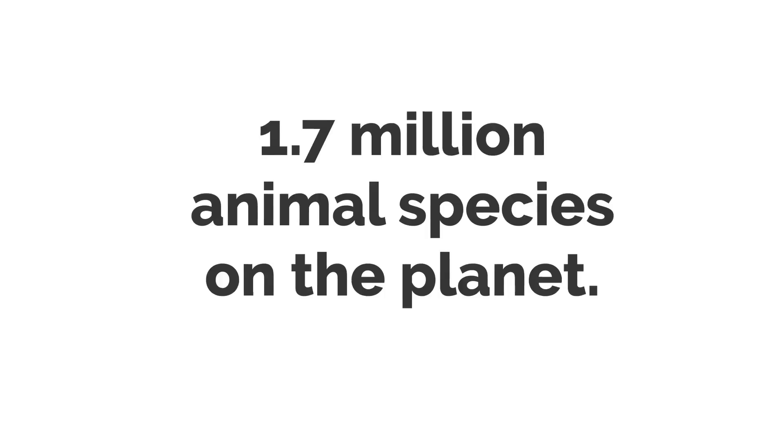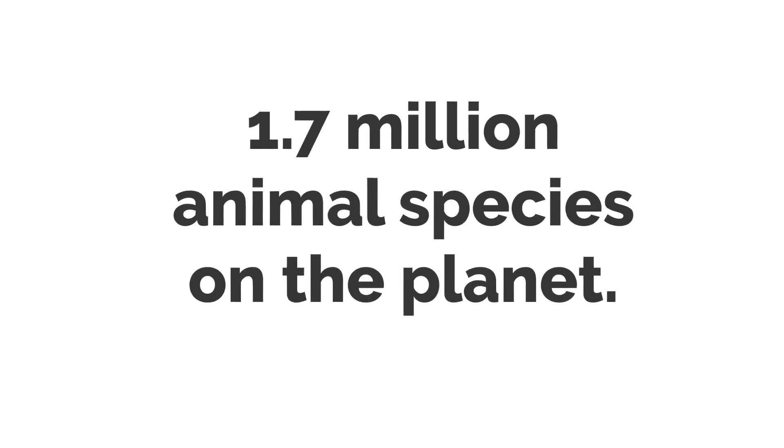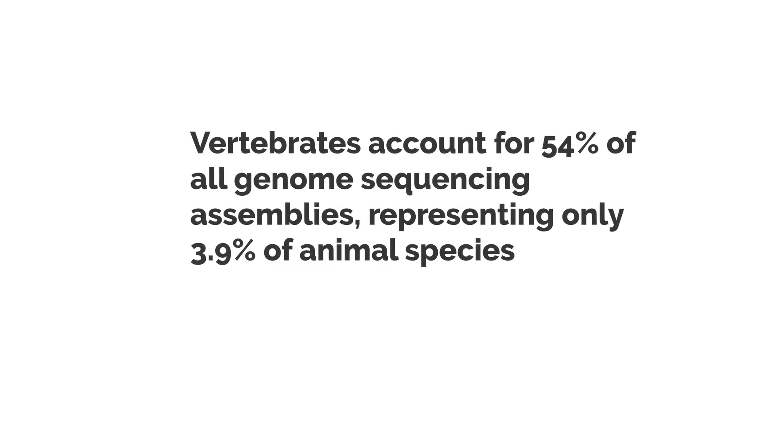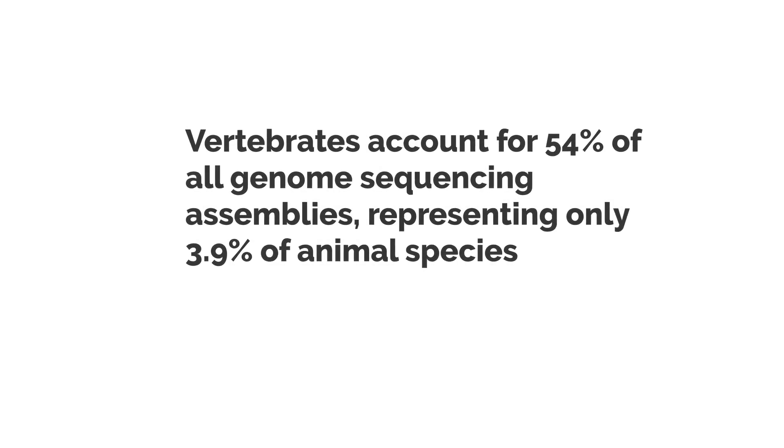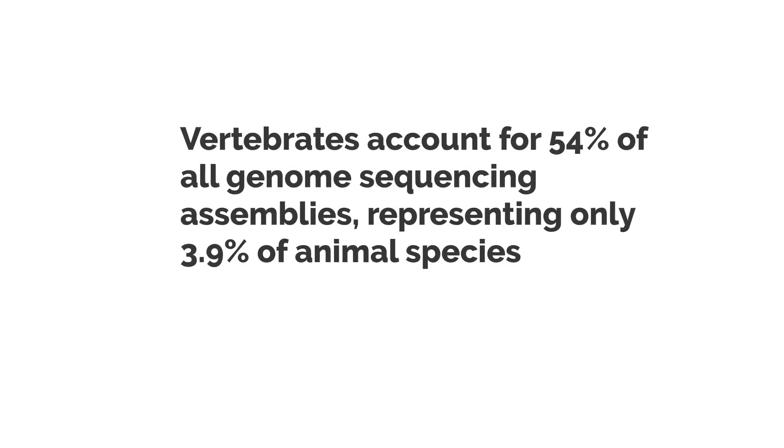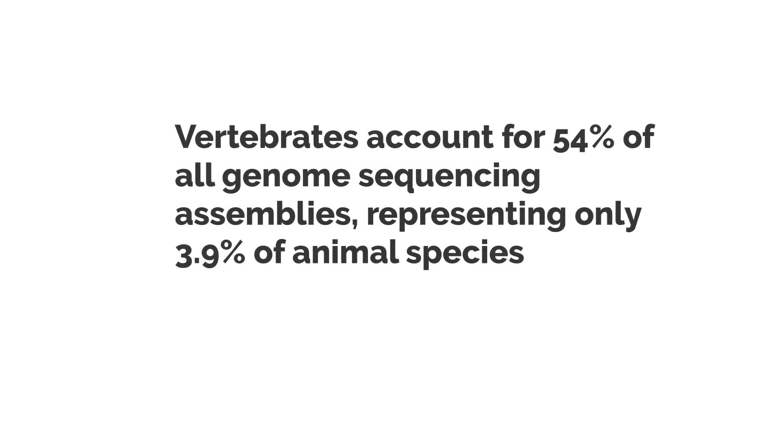It is estimated that there are approximately 1.7 million animal species on the planet. Vertebrates account for 54% of all genome sequencing assemblies, representing only 3.9% of animal species.